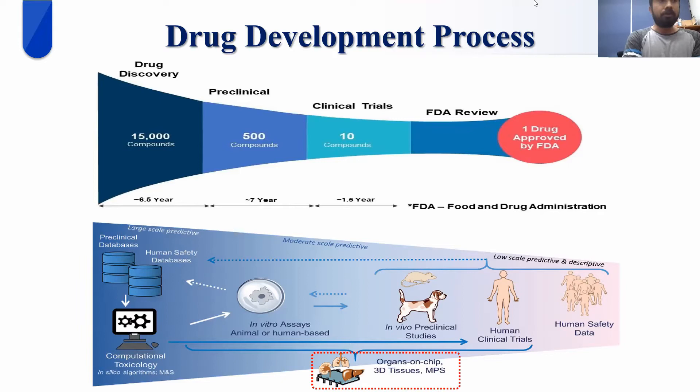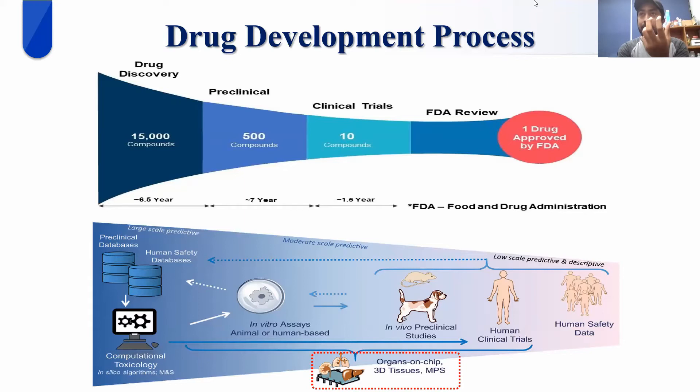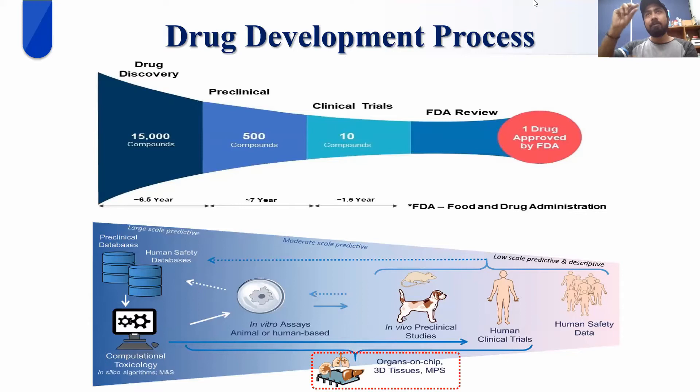Here I've added a very simple approach to let all participants understand how the drug development process works step by step. In the beginning, you try to understand first what the problem is — a health problem that a human being is suffering from. Then you study that disease. You say, okay, this disease is related to, for example, the liver. Liver has different biomarkers, and in simple language, if we target this specific thing, it can cure that problem.